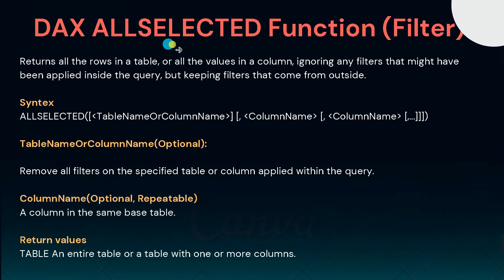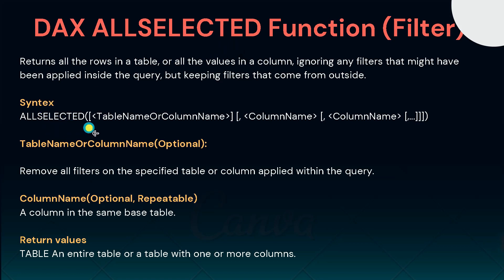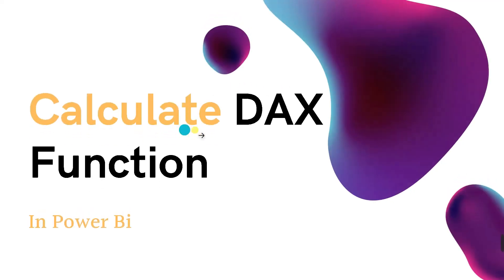The next is ALLSELECTED. In Power BI, when we want to return all the rows in a table or all values in a column by ignoring filters applied inside the query but keeping filters that come from outside, the best function to use is ALLSELECTED. Its syntax is: write the ALLSELECTED keyword, then inside the bracket pass a table name or column name from which you want to remove filters applied within the query. The return type may be an entire table or a table with one or more columns.